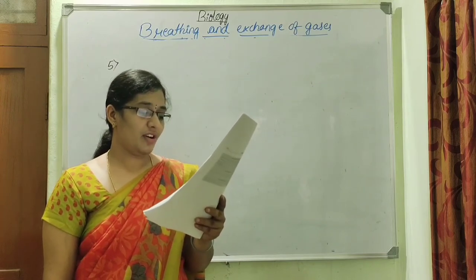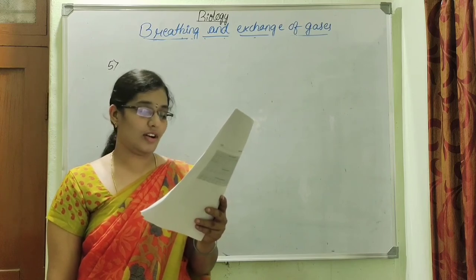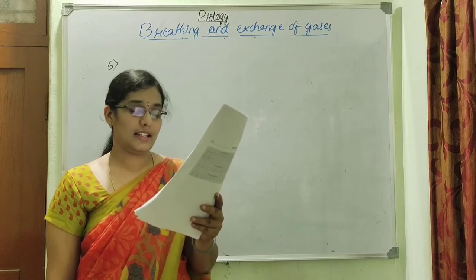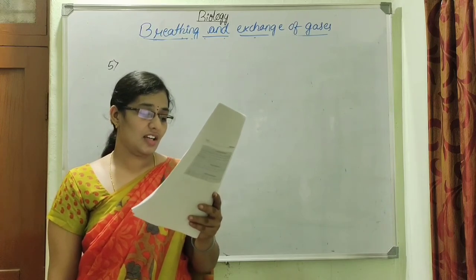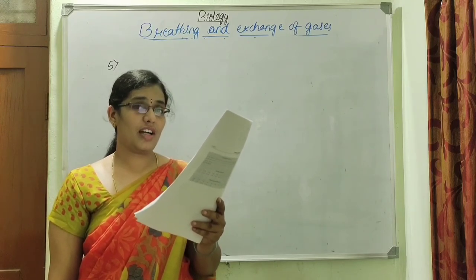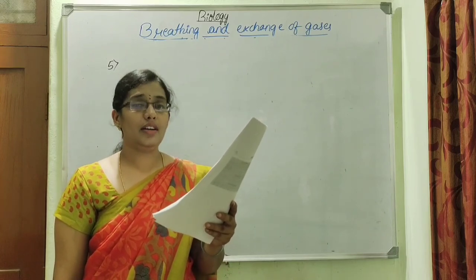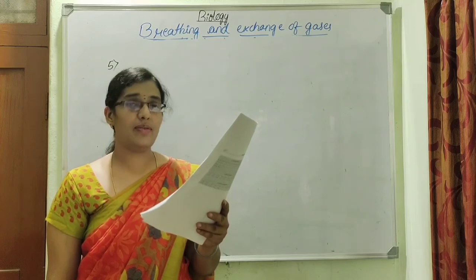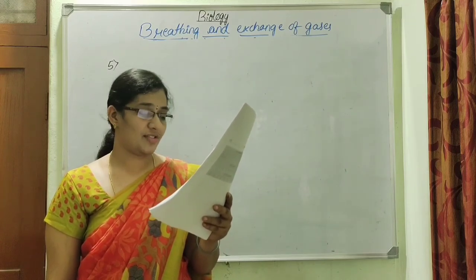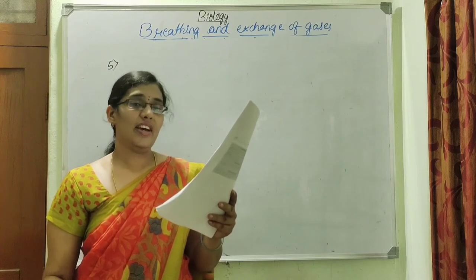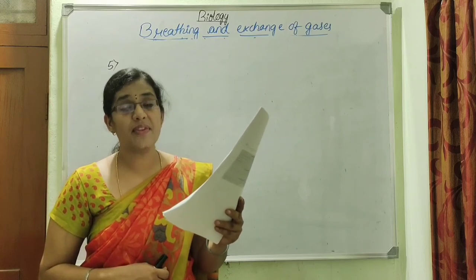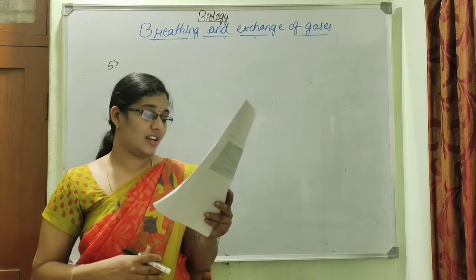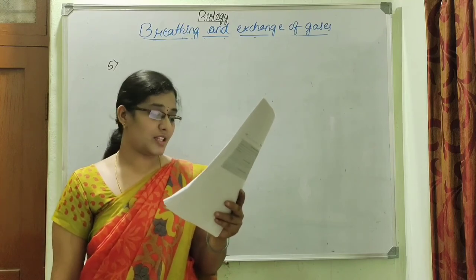Next question: In which of the following does the skin serve as an accessory organ of respiration? Options: A. Rabbit, B. Frog, C. Lizards, D. Birds. Answer: Option B — frog. Frogs are adapted for both aquatic and terrestrial life, exhibiting dual mode of respiration. When in water, they undergo cutaneous respiration; when on land, they show pulmonary respiration.